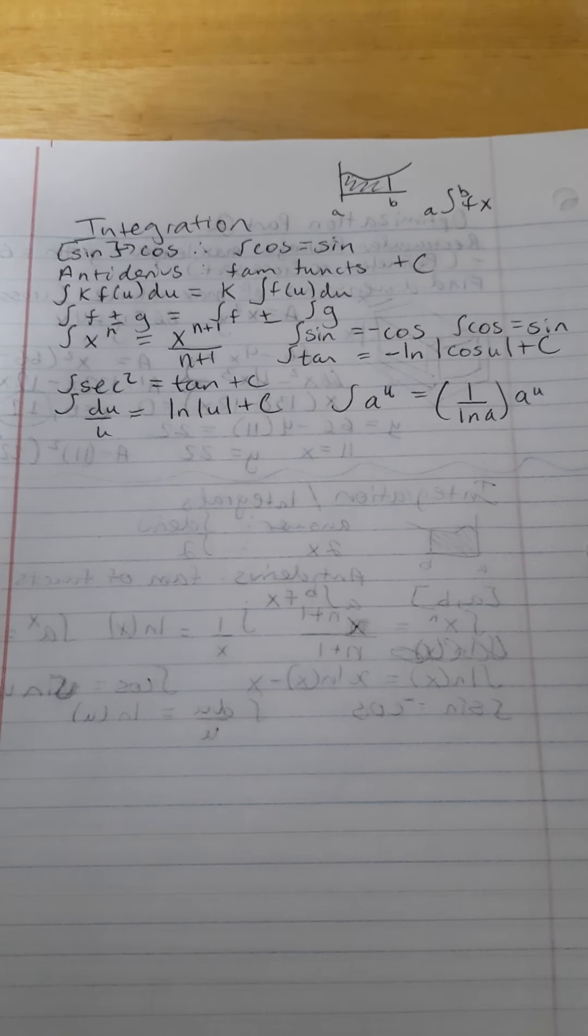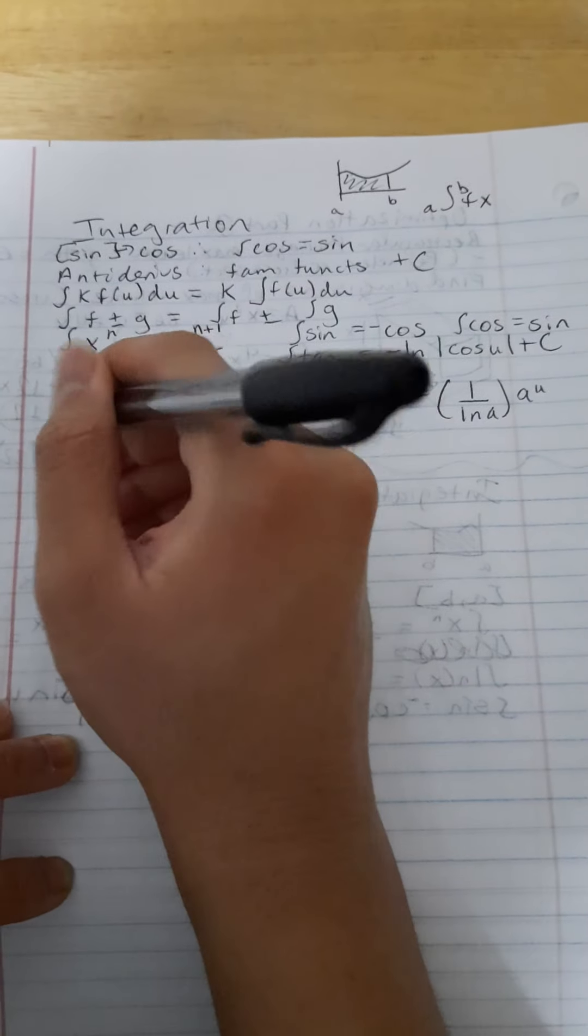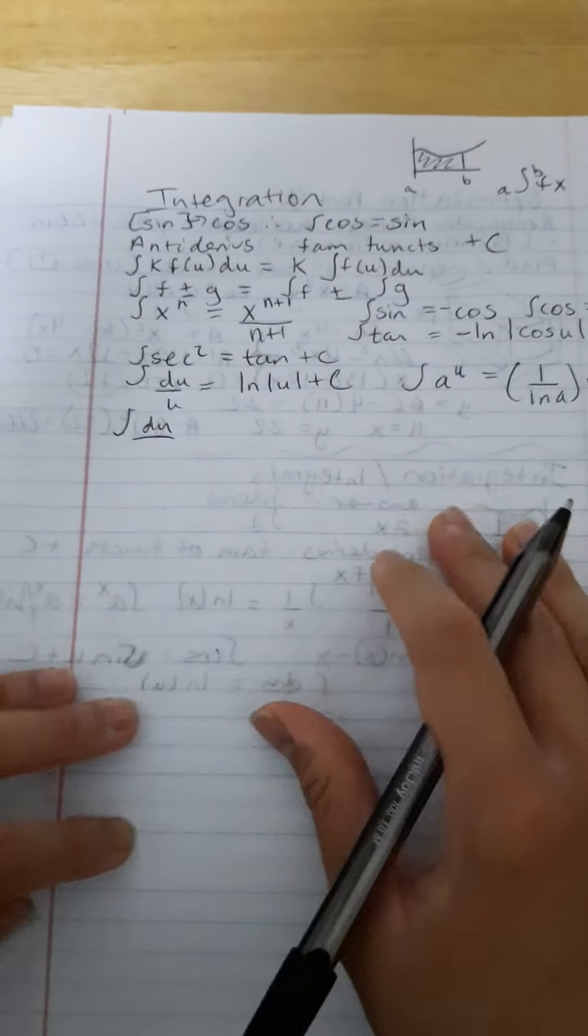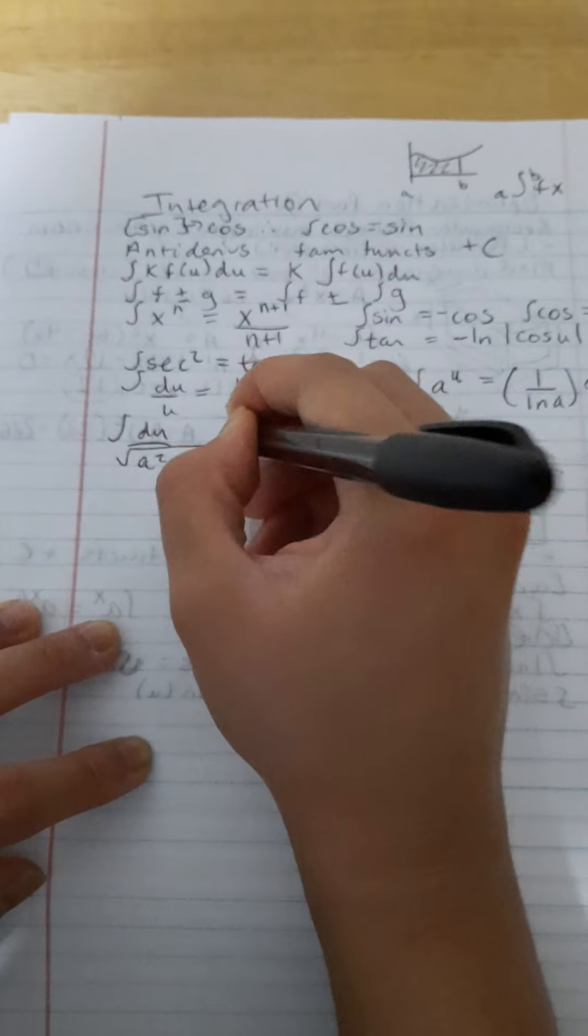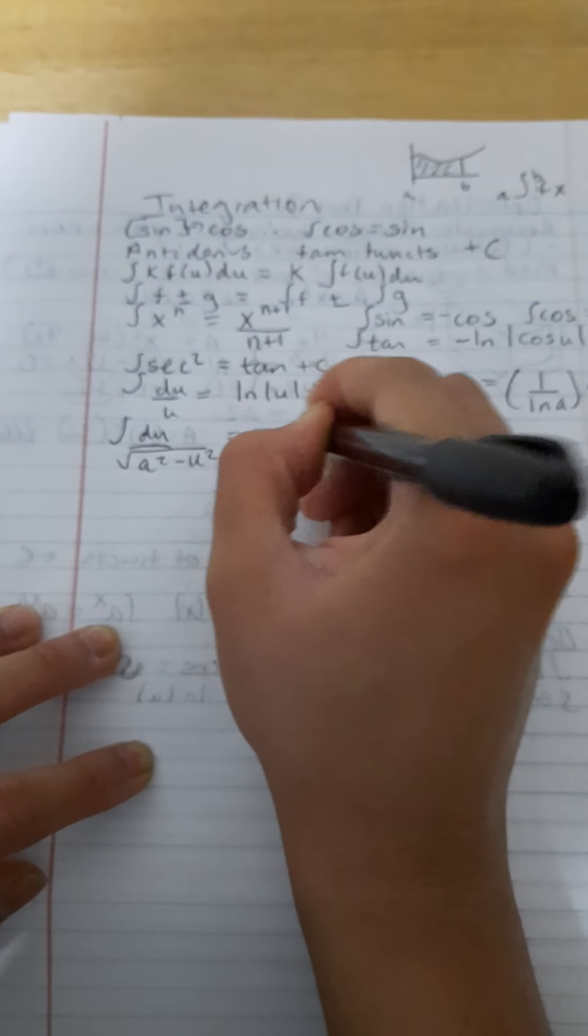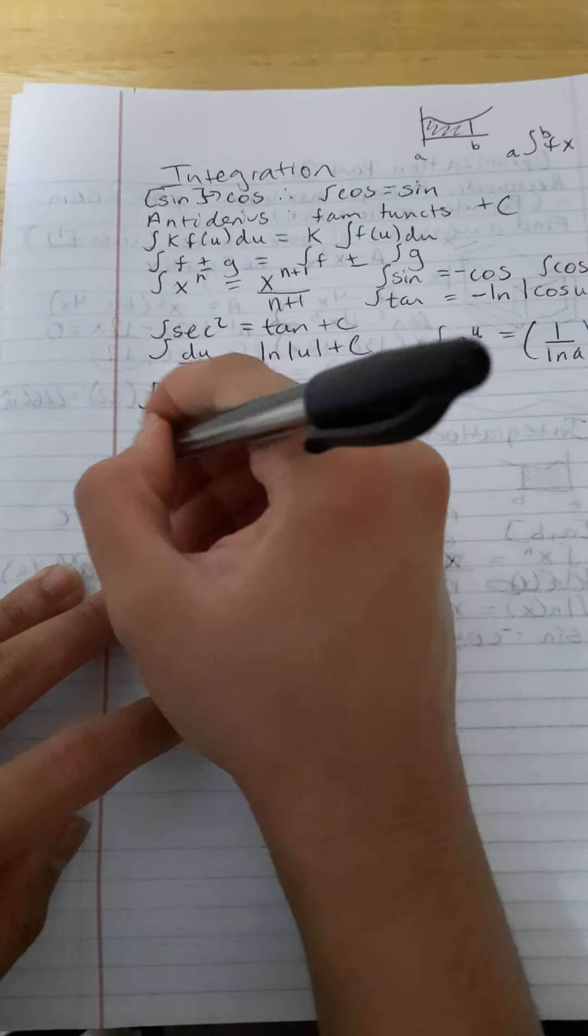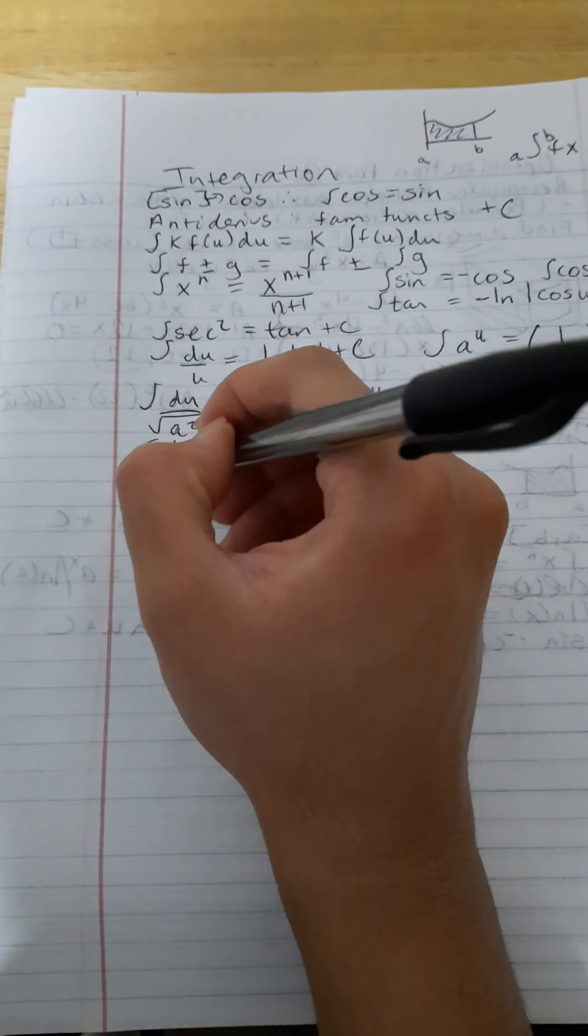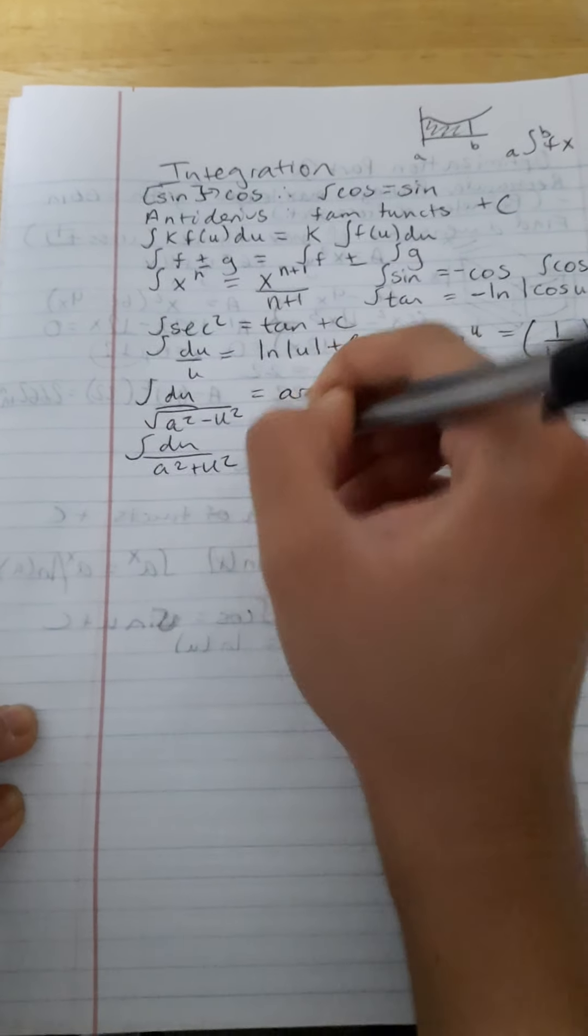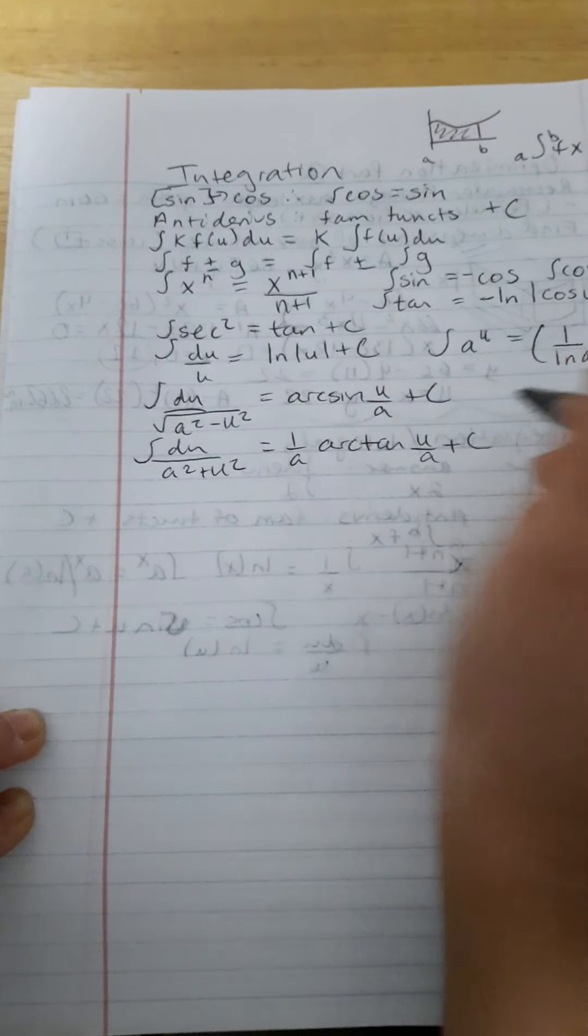Some other crazy stuff like that. We also have the inverse trig, so like arc sine, arc secant, arc tan. So first we have du over square root of a squared minus u squared is equal to arc sine u over a plus c.